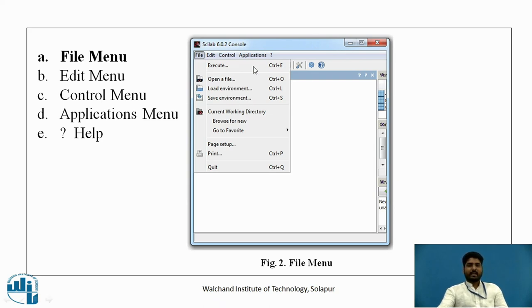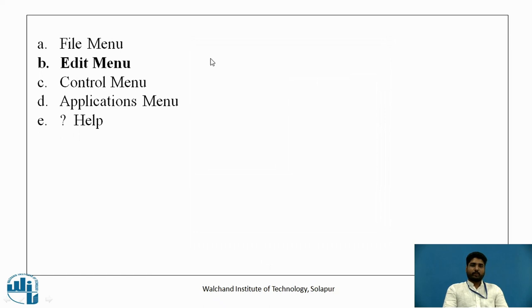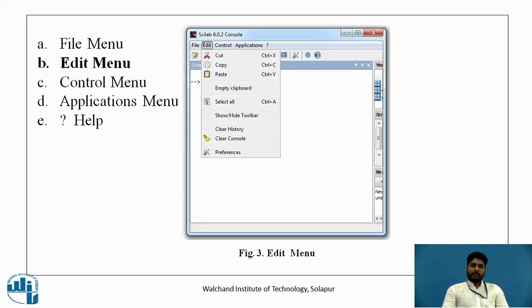Next, we can see here is edit, we will see what are the options in the edit menu. In edit menu, we can use cut, copy and paste or we can use the shortcuts what we use in a normal way that is control X for cut, control C for copy, control V for paste. Then, we have select all option and we have clear history and we have clear console also. Console is a window where we use all these operations where we do all the calculations. Once the calculation is done, we can clear it by using this clear console command. We have a shortcut for that also that is CLC command and there is a preferences.